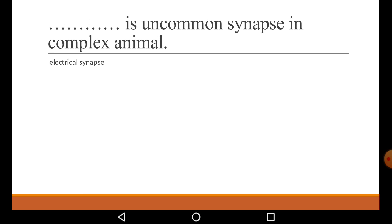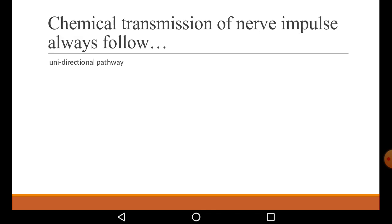Electrical synapse is uncommon in complex animals — mainly in humans, the electrical synapse concept is not commonly seen. Chemical transmission of nerve impulse always follows a unidirectional pathway. Nerve impulse transmission always follows an electrochemical pathway and is always unidirectional — chemical transmission goes in only one direction. A neurotransmitter, once it binds with the receptor, cannot go back to its origin place.